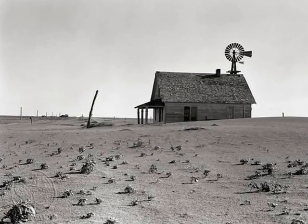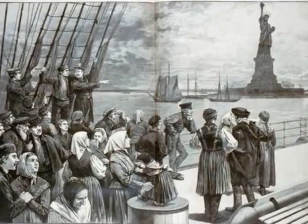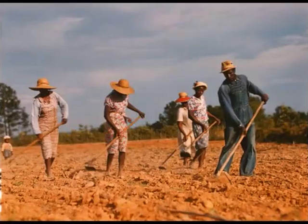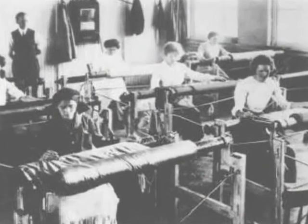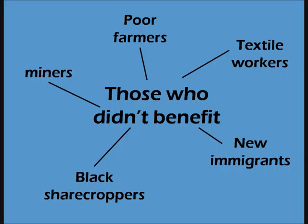There are five key groups of people who in 1920s America did not share in the supposed prosperity of the boom, and any set of questions that focus on the economic boom will most likely also inquire into these as well. Poor farmers, textile workers, black sharecroppers, miners and new immigrants all suffered in the 1920s, and it is important you know and can explain why that is.